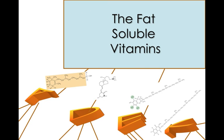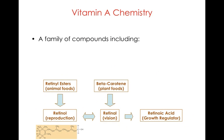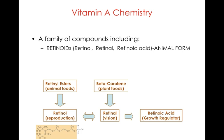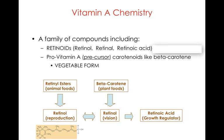Fat-soluble vitamins. Let's first look at vitamin A. These are a family of compounds that include what are called retinoids — retinol, retinal, and retinoic acid. The retinoids are the animal form of vitamin A. Then we have the vegetable form of vitamin A, known as pro-vitamin A or the precursor form. These are known as carotenoids.